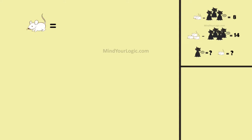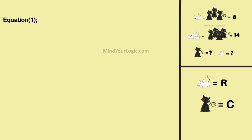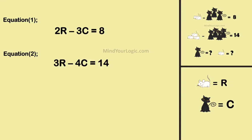Let the rat be r and the cat be c. Equation one: 2r minus 3c equals 8. Equation two: 3r minus 4c equals 14.